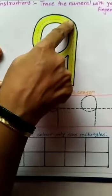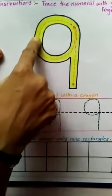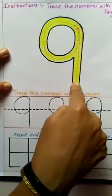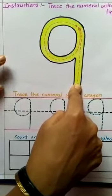We will do it again. Start from here. Complete a circle and then stretch a standing line. Number 9.